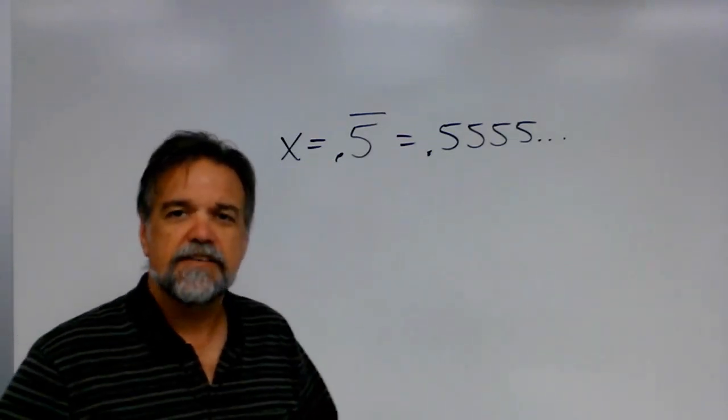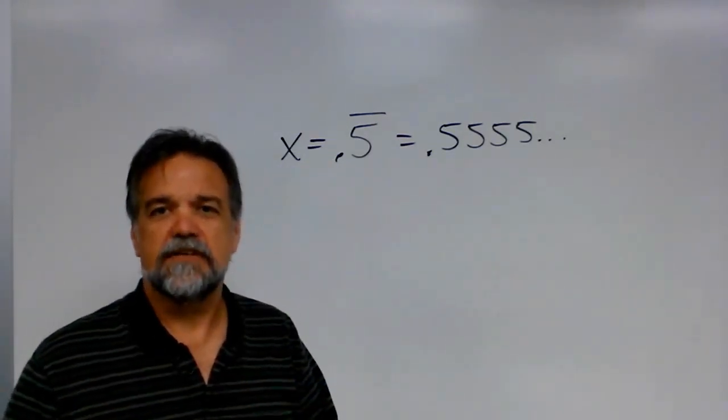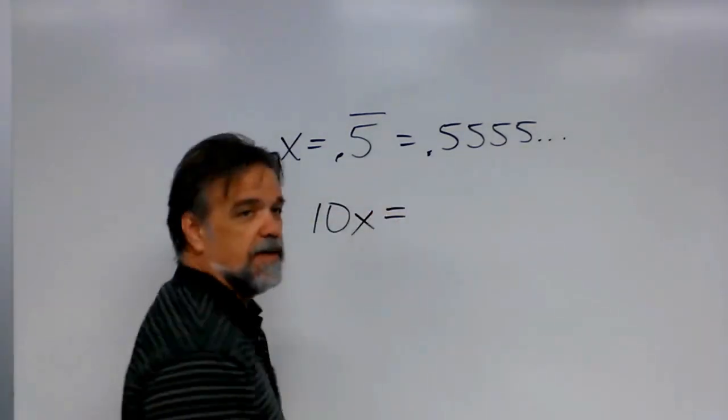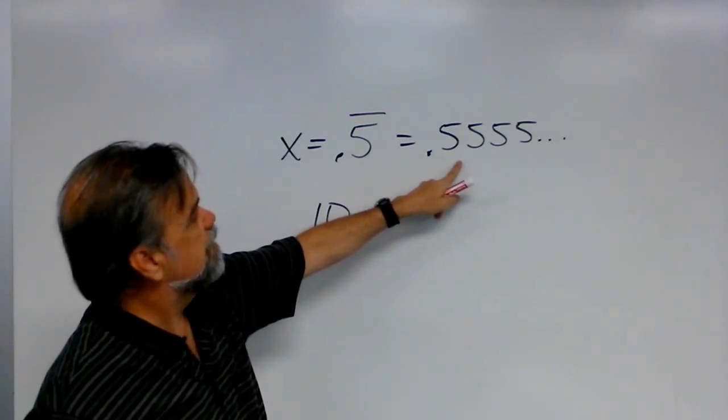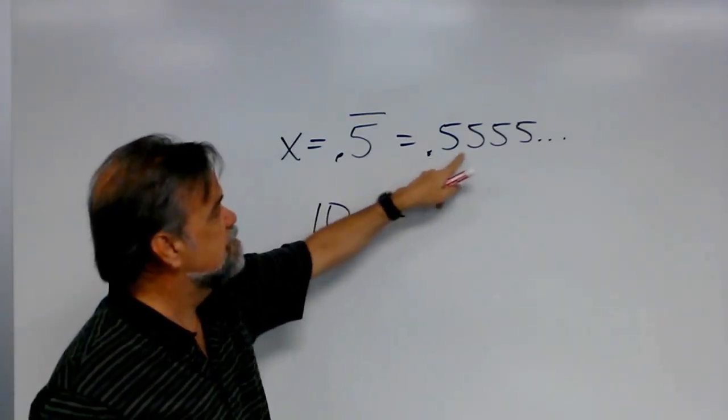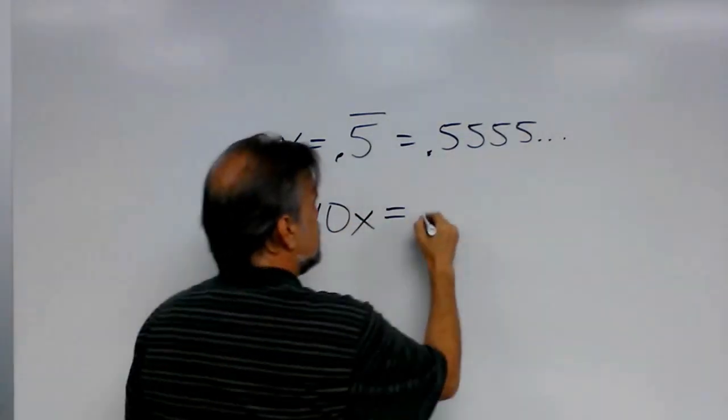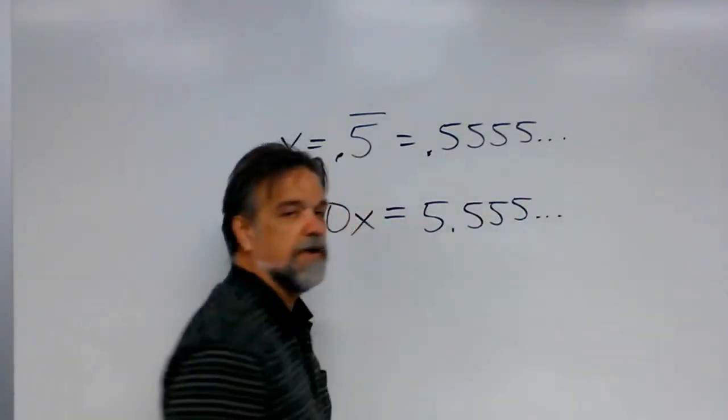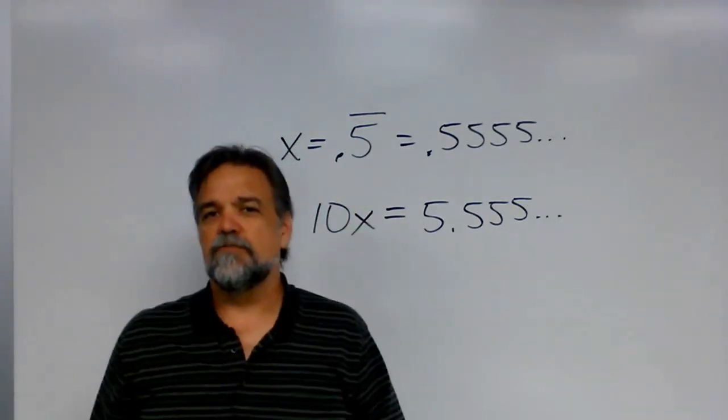So, here's the trick. Ask yourself, what's ten times x? Well, ten times x is ten x. But what's ten times this number here? Well, multiplying a number times ten, all you do is you just move the decimal point over. So, this would be 5.555, et cetera, right?